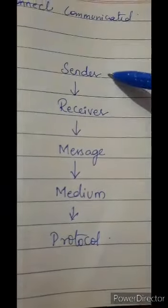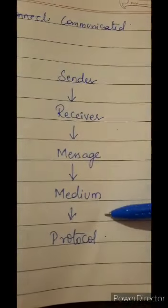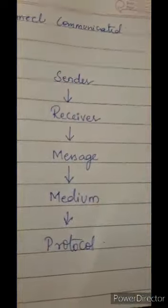Let us see a flowchart: sender, receiver, message, medium, and protocol. Here we have a diagram showing how information passes between two devices through the medium, with protocol providing the set of rules. In this way, data can be communicated easily. Thank you for this opportunity.